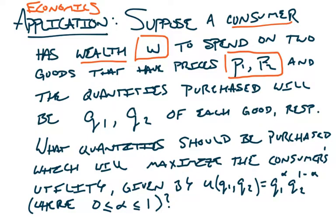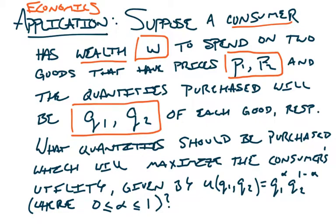The quantities purchased are called Q1 and Q2. If good one is Snickers bars, P1 is the price of a Snickers bar and Q1 is the total number purchased. Q2 would be the quantity of the other candy bar, say Hershey's bars, and P2 is its price. With just wealth, prices, and quantities, we're not talking about optimizing anything yet — they've got a certain amount of money to spend, so it's not like we can minimize their cost.